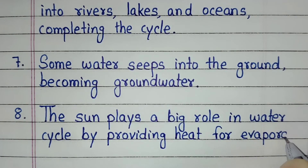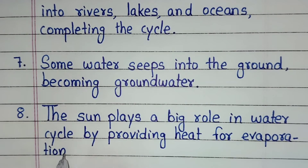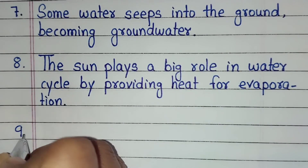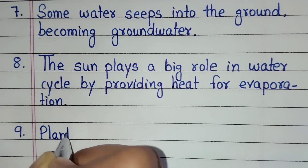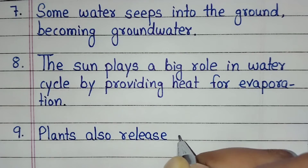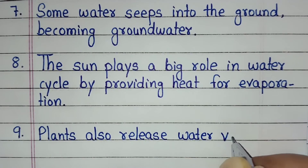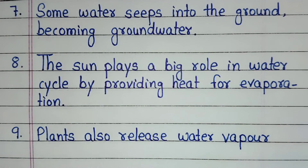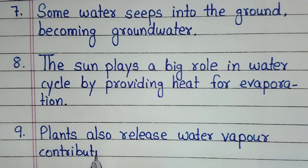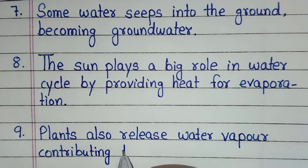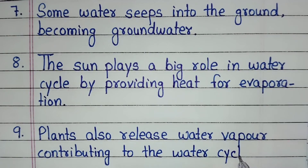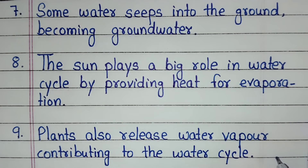The sun plays a big role in the water cycle by providing heat for evaporation. Plants also release water vapour, contributing to the water cycle.